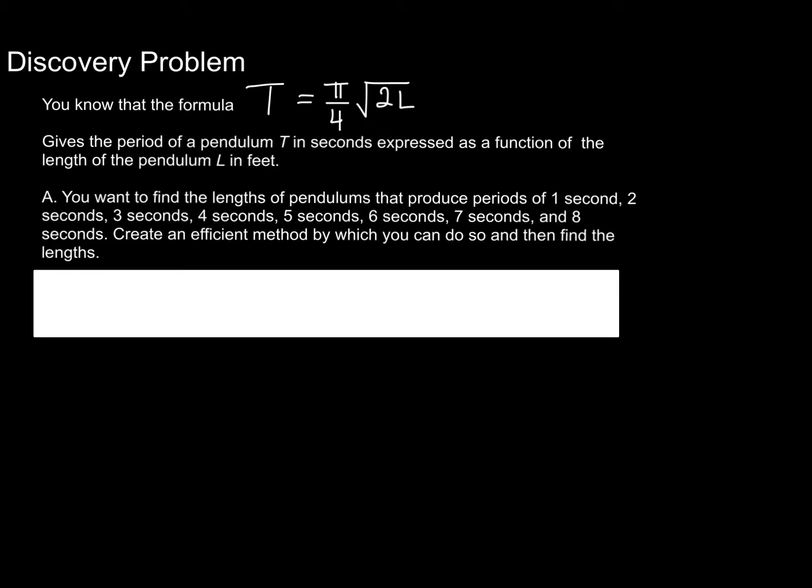Alright, so here's this formula. You've actually seen it before. It gives the period of a pendulum, which is T in seconds, expressed as a function of the length of the pendulum, which is L in feet.